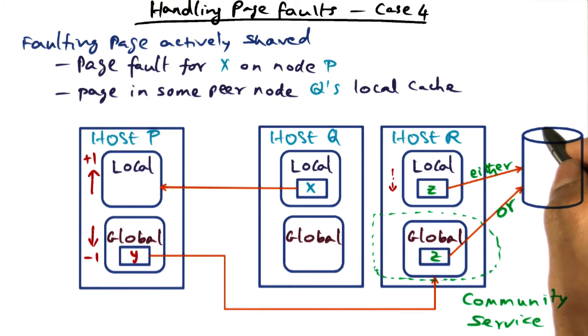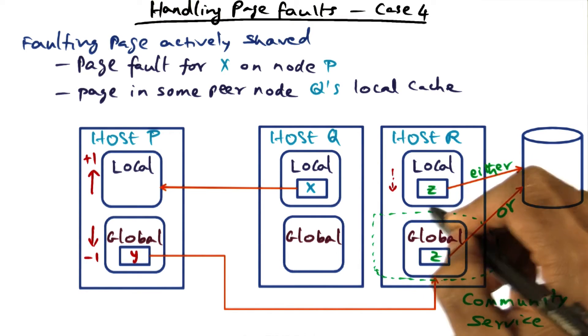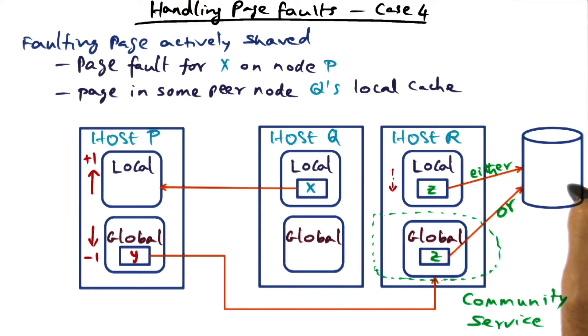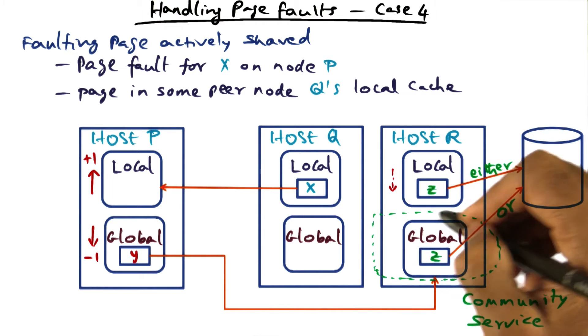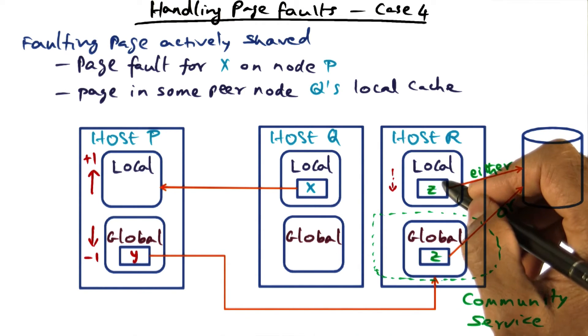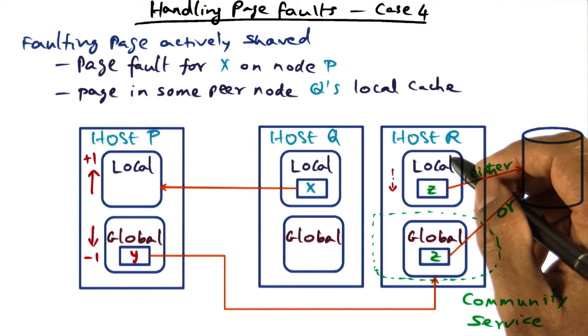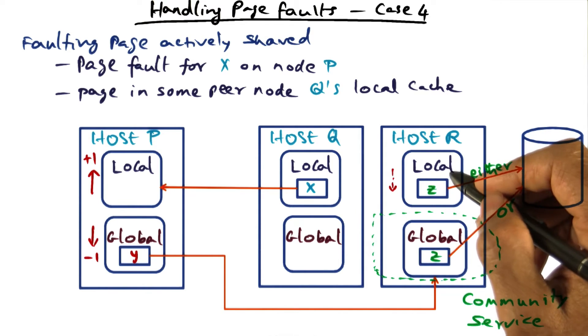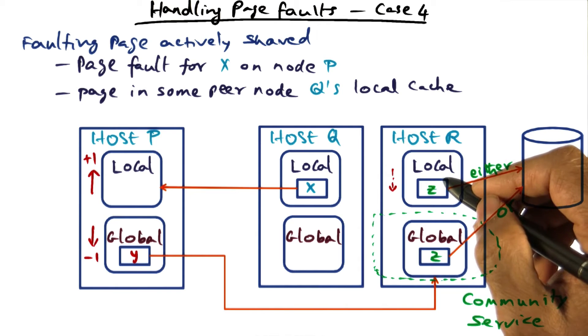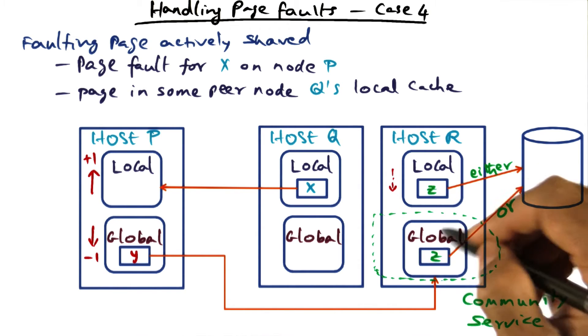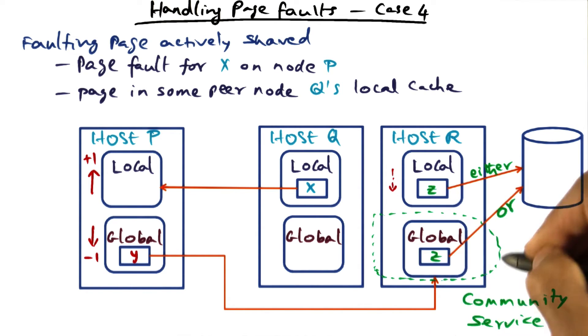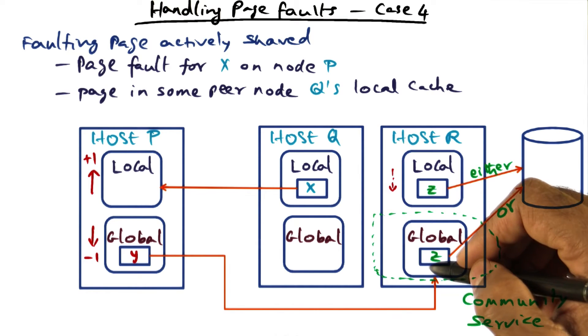In either case, the important message is that if the LRU candidate that we're going to throw out onto the disk or drop on the floor comes from the local part of R, that means, similar to the previous case, the working set on local R is shrinking. It's coming down by one, which means host R can do more community service in the future.